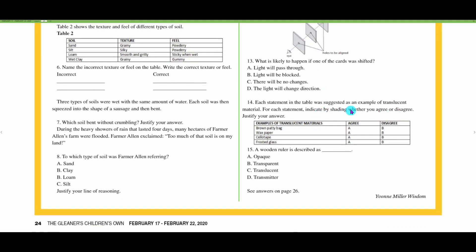Number fourteen: each statement in the table was suggested as an example of translucent material. From each statement indicate by shading whether you agree or disagree and justify your answer. We have brown paper bag, wax paper, cellotape, frosted glass. Brown paper bag translucent if it is greasy. Wax paper, that's translucent. Cellotape, no that's not translucent, that's transparent. And frosted glass, yes that would be translucent.